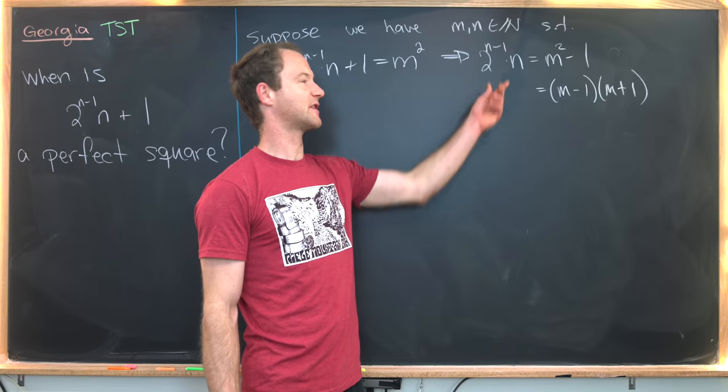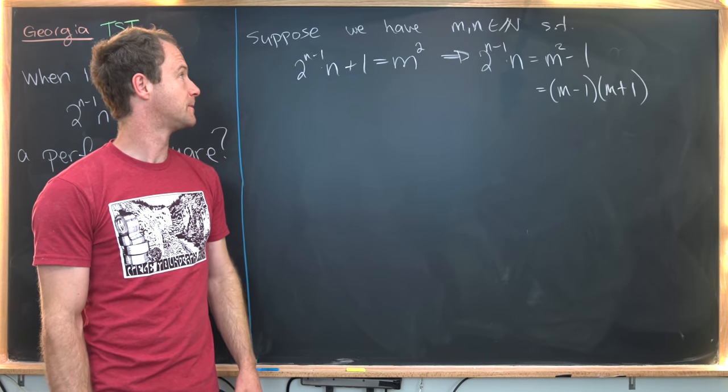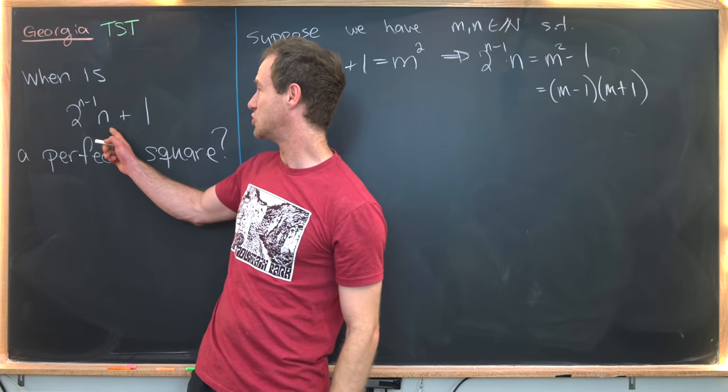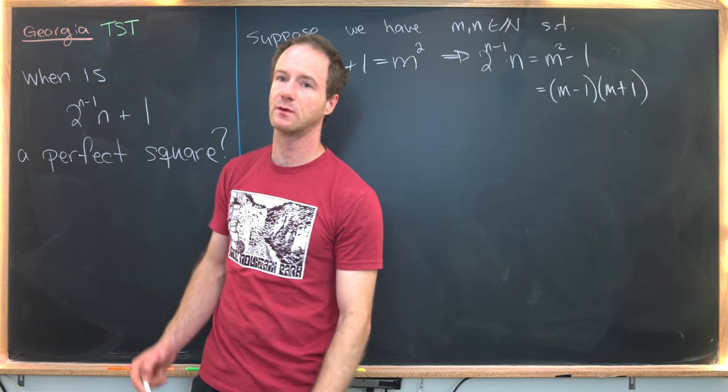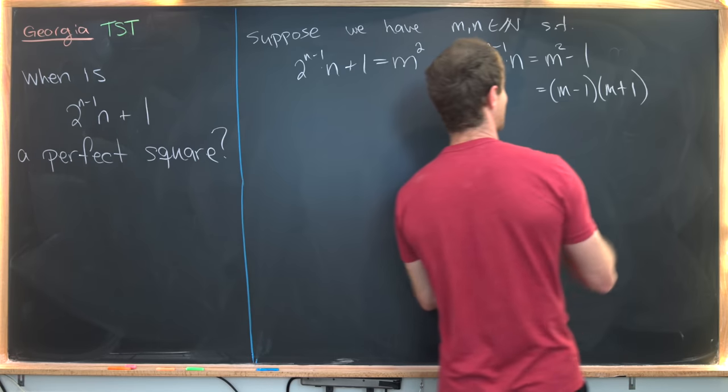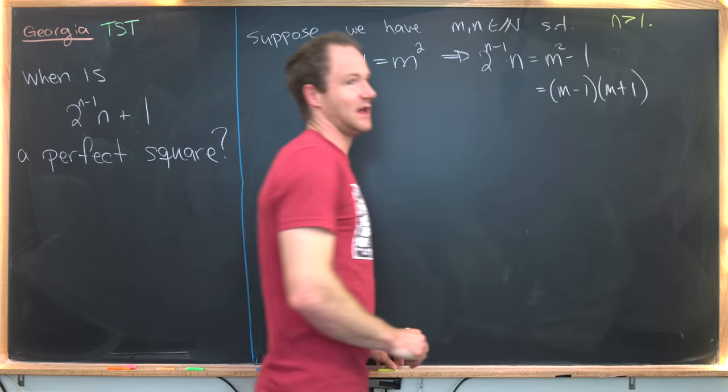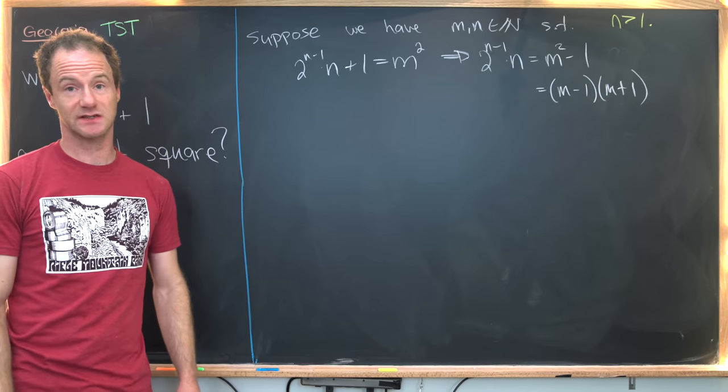Next up, I want to notice that the left hand side of this is only odd if n equals 1. But if n equals 1, we get 1 + 1, which is 2, which is not a perfect square. So we might as well assume that n is strictly bigger than 1 because the n equals 1 case obviously doesn't work.